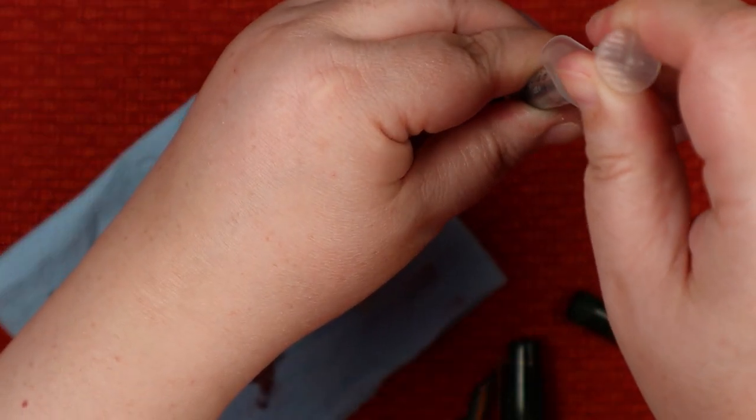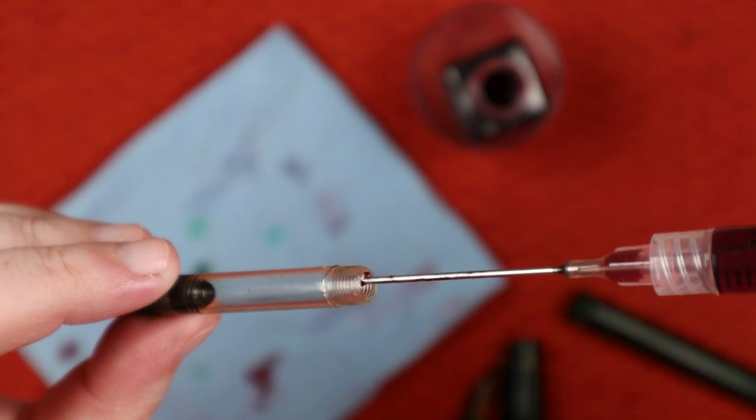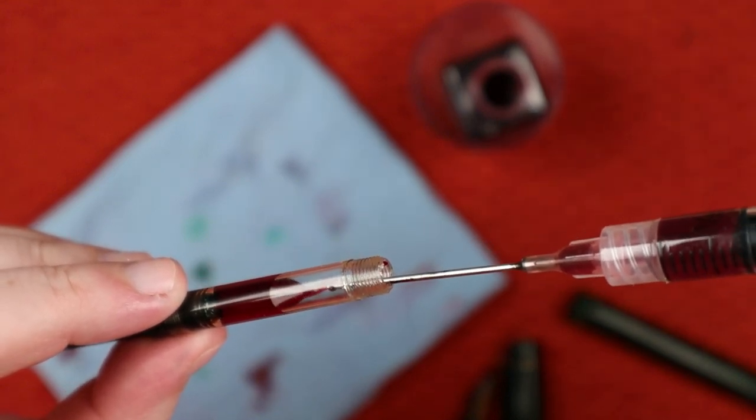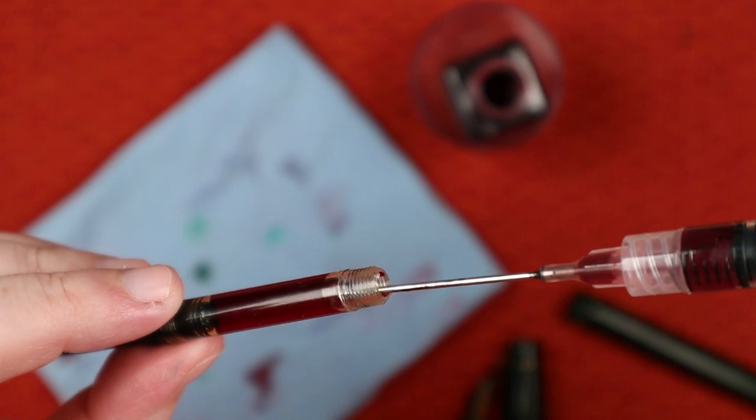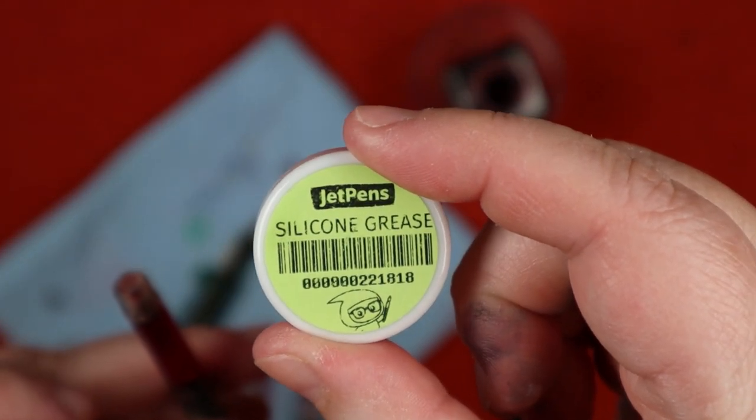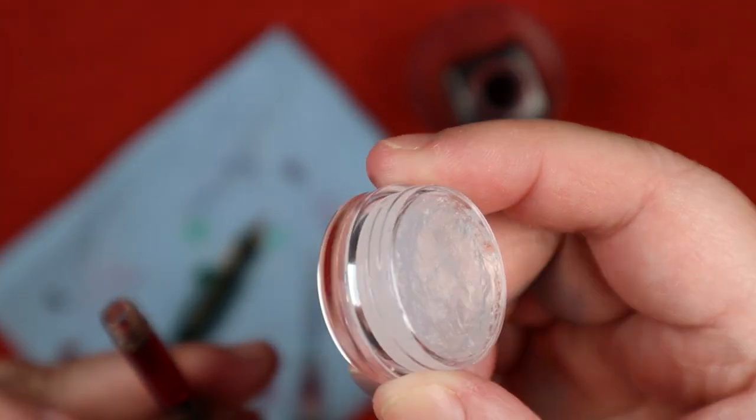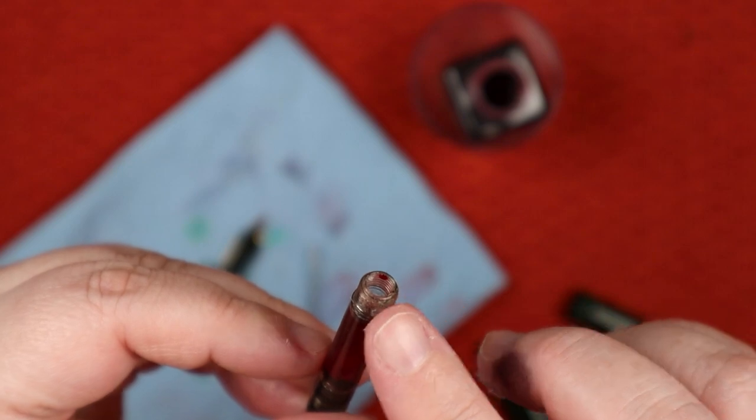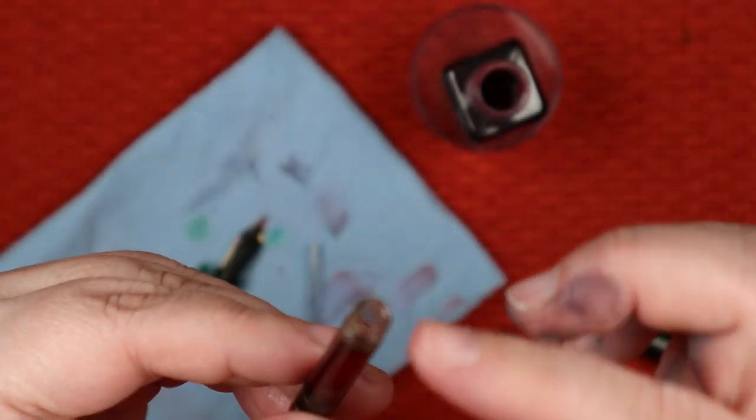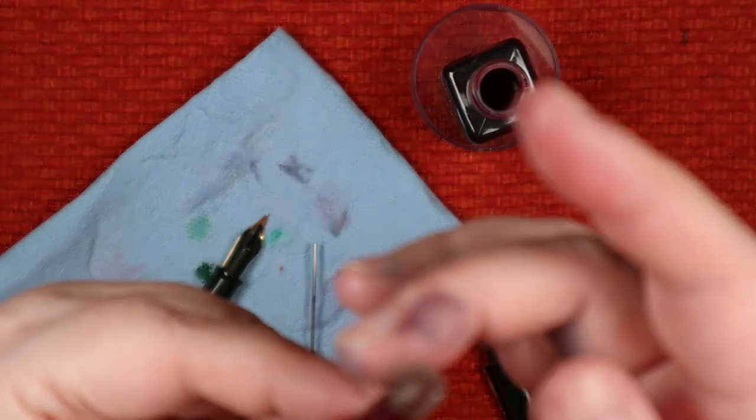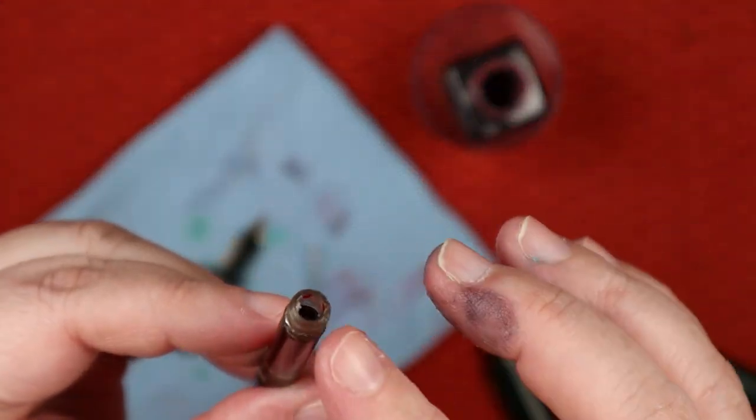The cap and body are made of ebonite. The cap is the screw-on type, and a screw-in converter was included. Interestingly, while reading the description on their website, it says this model does not accept ink cartridges. I hadn't ever encountered that feature before, or should I say non-feature.